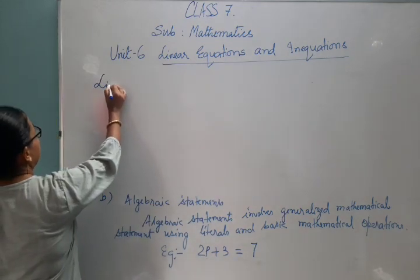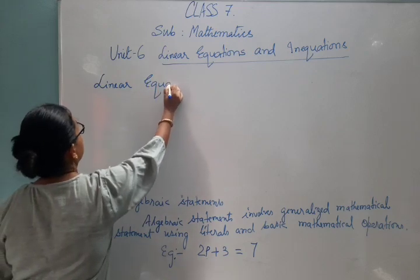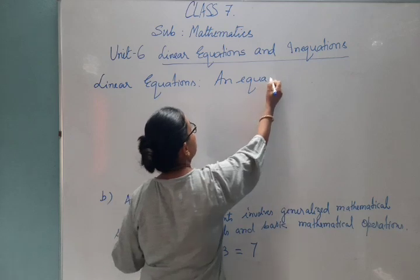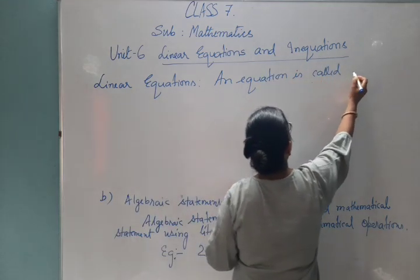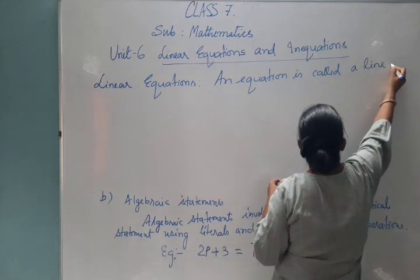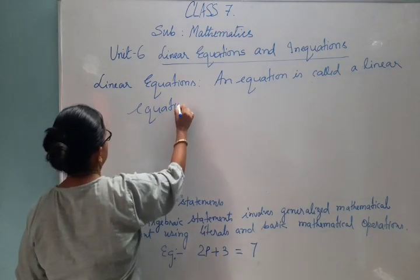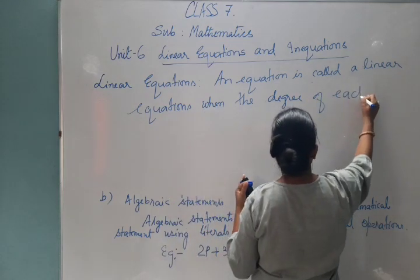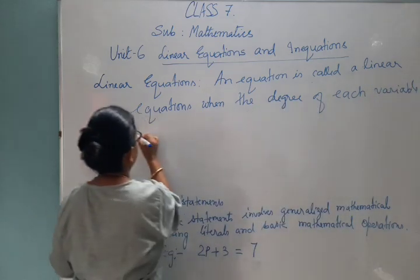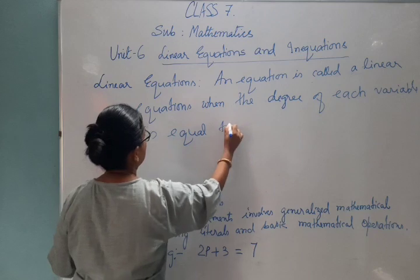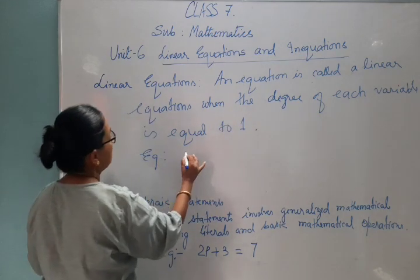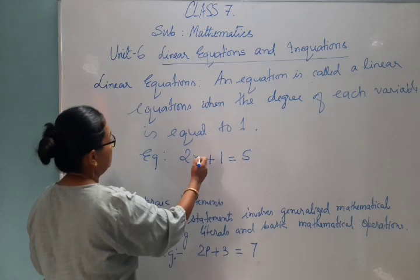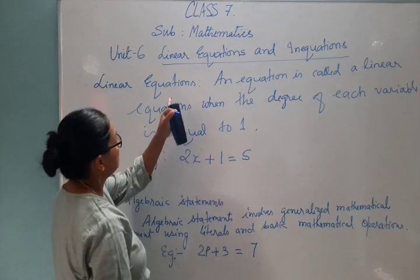Now we are going to do linear equations. An equation is called a linear equation when the degree of each variable is equal to one. For example, two X plus one equals five. The degree of the variable X is one, so this is called a linear equation.